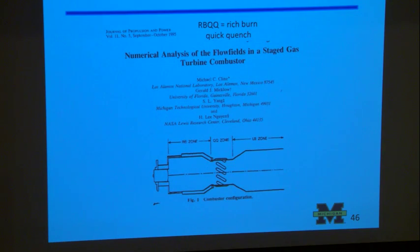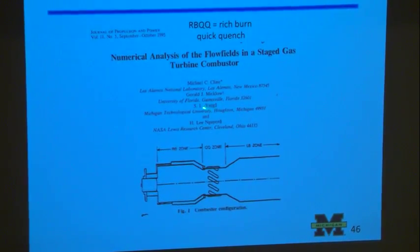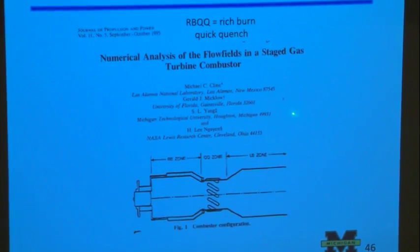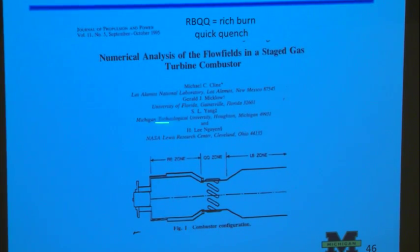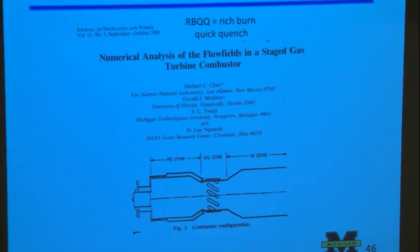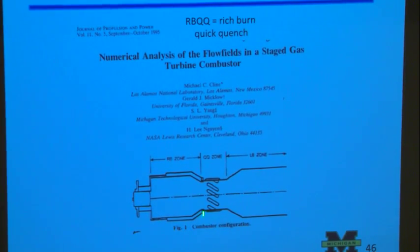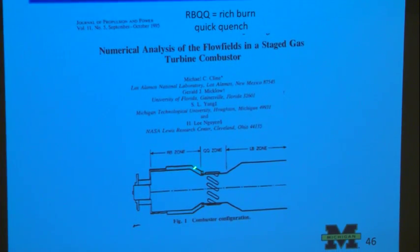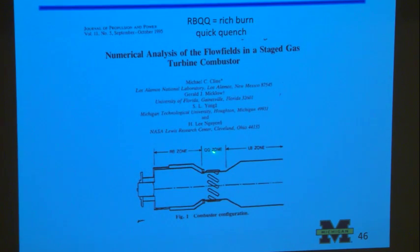There's a nice paper by people at the University of Florida, Michigan Tech, and NASA Lewis. They did a numerical analysis and represented the jet engine picture by a simpler geometry with a rich burn zone, a quick quench zone, and a lean burn zone. They draw lines to indicate where air might be added to dilute the fluid.